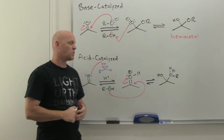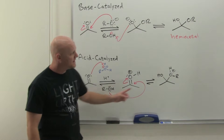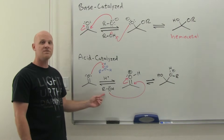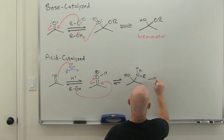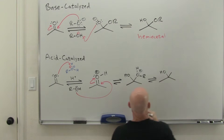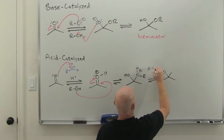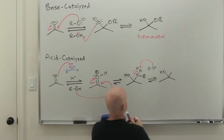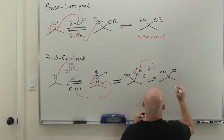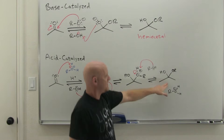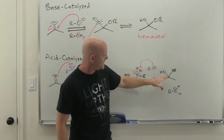Just as we saw with hydration when water was the nucleophile, when a neutral nucleophile attacks you end up with a positive formal charge on the oxygen, and it gets deprotonated by the solvent. In this case the solvent isn't water — it's the alcohol — so we draw in another equivalent of the alcohol to deprotonate it. Once again we've formed a hemiacetal: that carbon is bonded to both an OR and an OH.